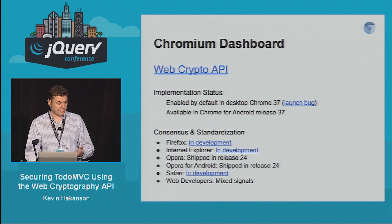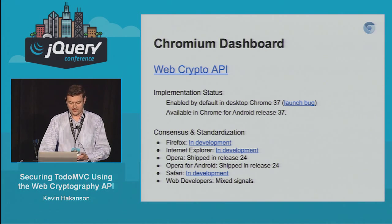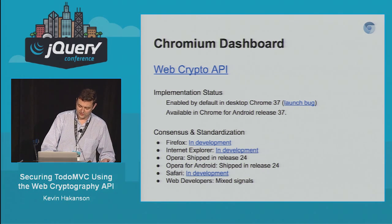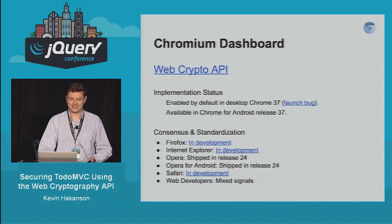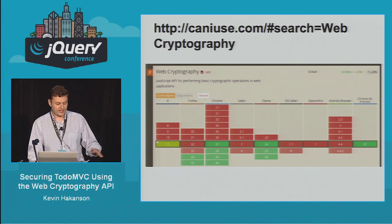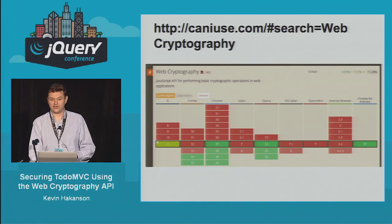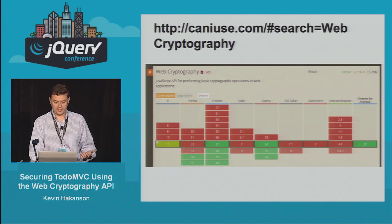A good place to look for current status is the Chromium dashboard. It shows the API is in Chrome 37, in development in Firefox and Internet Explorer, and shipped in Opera 24. One useful tip — if you want to know your current browser version, go to caniuse.com. It has a nice black bar showing you the current version of each browser, which confirms Chrome 37 and Opera 24 are current mainline browsers that already have some of this stuff.